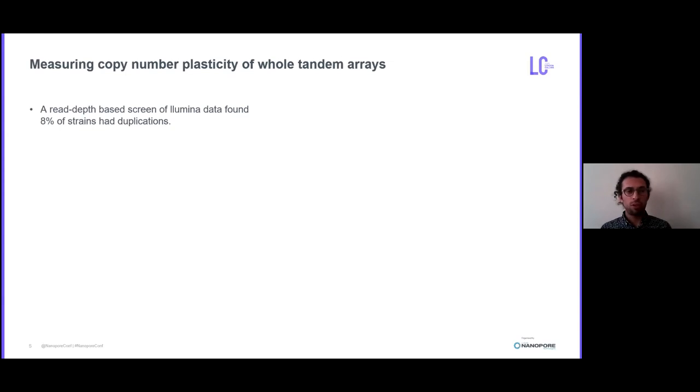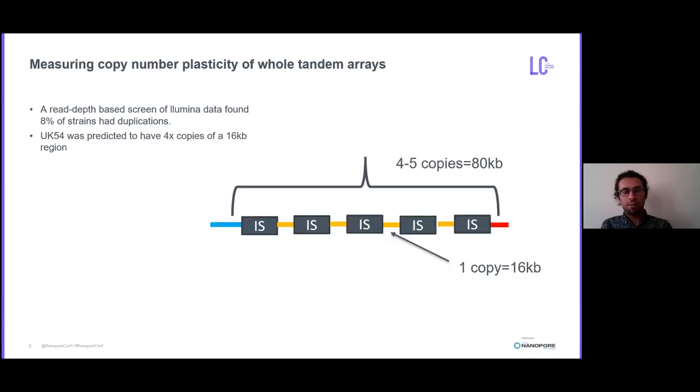So we're going to show you two experiments that we did which exemplify these two methods, which are all part of a larger body of work on this subject which revolved around screening huge amounts of Illumina data. We screened about 2000 Illumina strains and we found there was prevalence of 8% of these strains had these mutations, these duplications. And from that pool we were able to identify isolates that we wanted to study further. We found one, UUK54, which was predicted to have four copies of a 16 KB region. This meant in its full tandem configuration it had four to five copies which was about 60 to 80 KB.